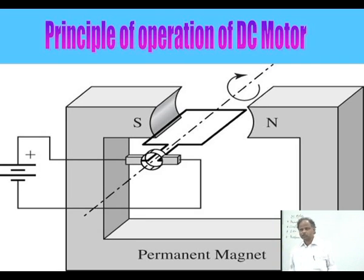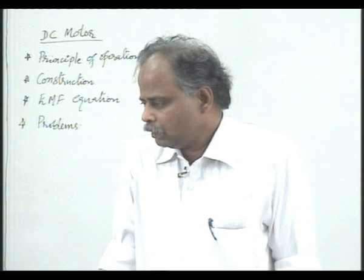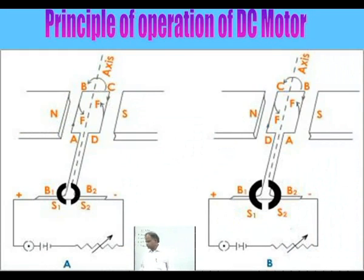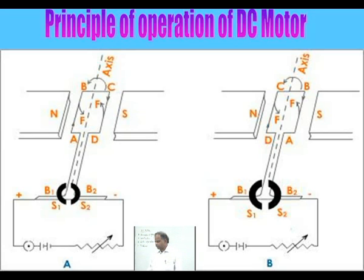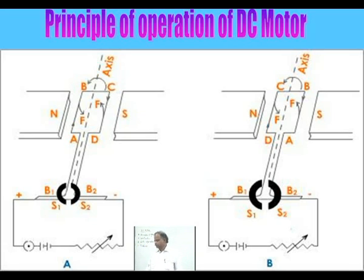Looking at the diagram for the principle of operation of the DC motor, we can understand how the motor produces rotation. As you see in the figure, there are two figures: figure A and figure B. In figure A, there is a coil ABCD placed between the north and south poles of a magnet. This coil is connected to commutator segments S1 and S2 through brushes B1 and B2. The coil is connected externally to a DC supply — a DC source battery.